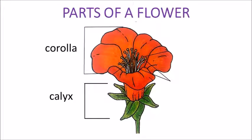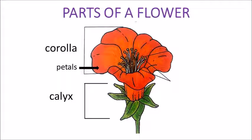Parts of a flower. The flower has got two main parts: the corolla and the calyx. The corolla has got different petals. The calyx has got different sepals.